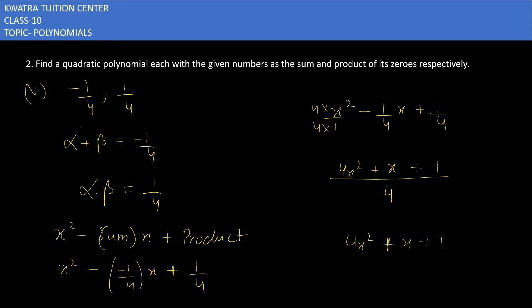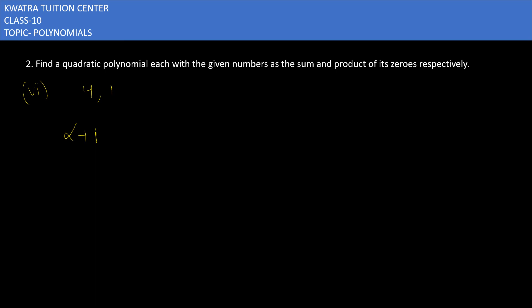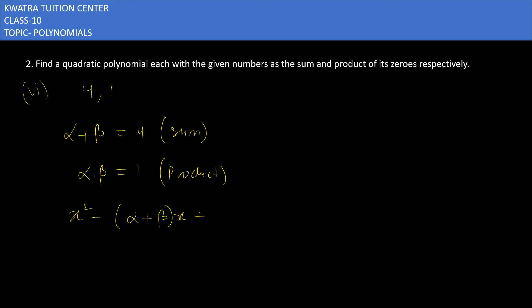Moving to the sixth part: alpha plus beta is 4 and alpha dot beta is 1. Using the formula x squared minus (alpha plus beta)x plus (alpha dot beta), we get x squared minus 4x plus 1. This is the quadratic polynomial for the sixth case. That is the end of Exercise 2.2. Exercise 2.3 has been deleted from the syllabus, so we will start with the next chapter, which is the third chapter.